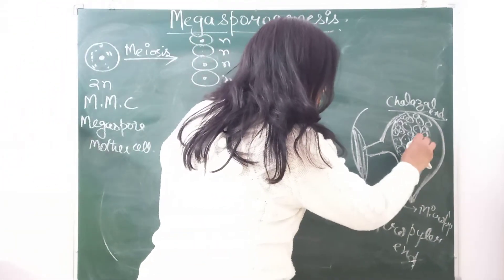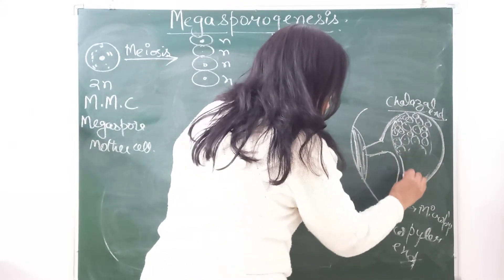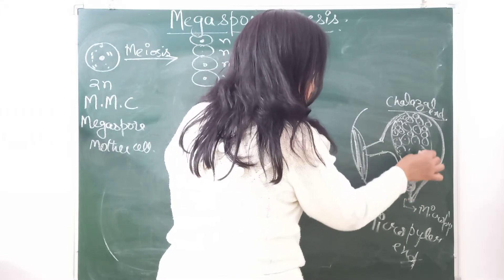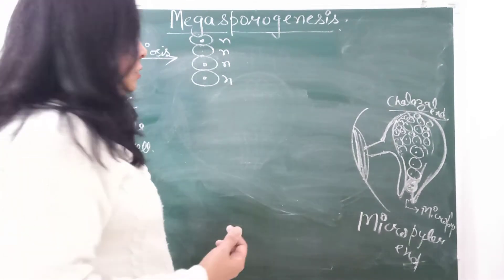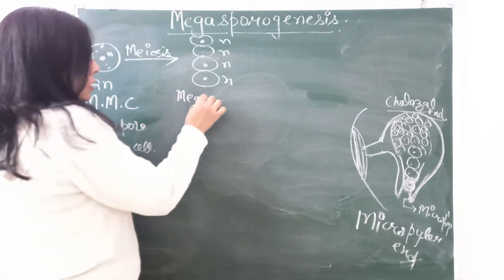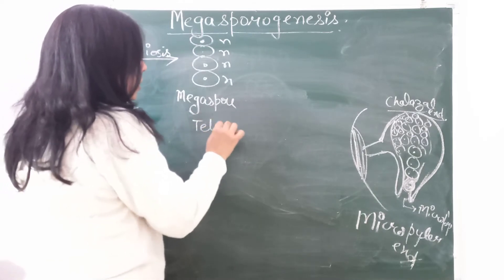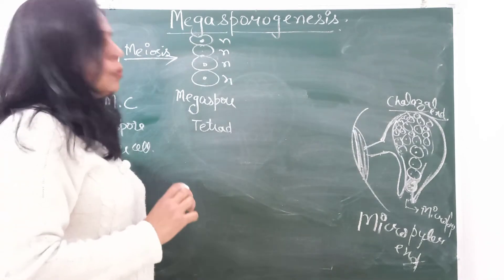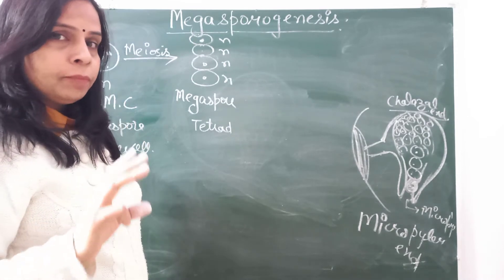Let me rub it here. These four cells, this one cell undergoes meiosis to form two, three, four. This will form megaspore tetrad. This is megaspore mother cell forming megaspores. Four cells, so we can call it a tetrad. All the cells are haploid.